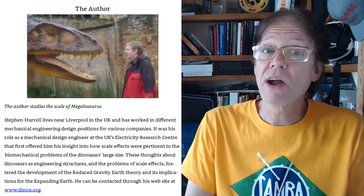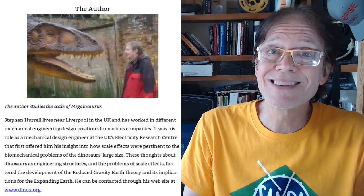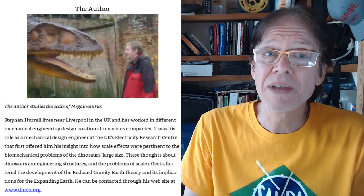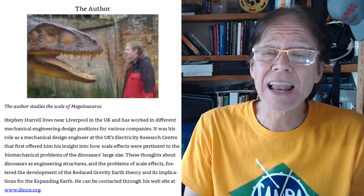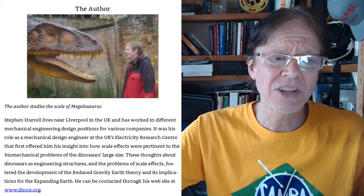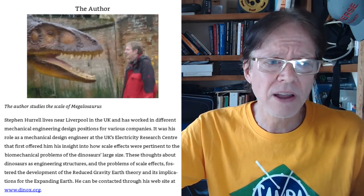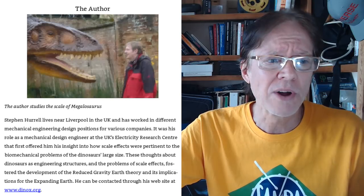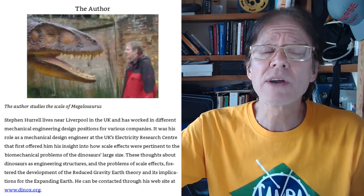It was his role as a mechanical design engineer at the UK's Electricity Research Center that first offered him insight into how scale effects were pertinent to the biomechanical problems of the dinosaurs' large size. These thoughts about dinosaurs as engineering structures and problems of scale effects fostered development of the reduced gravity theory and its implications for the expanding Earth. Reduced gravity theory means what? That the Earth was smaller, but its gravitational field was smaller, meaning it had less mass. That's an apple cart you don't want to overturn in mainstream science.